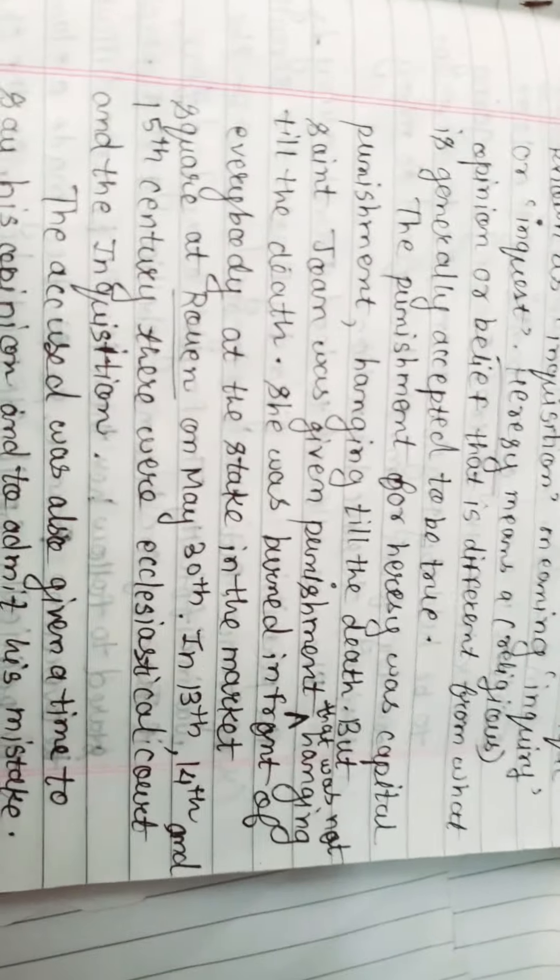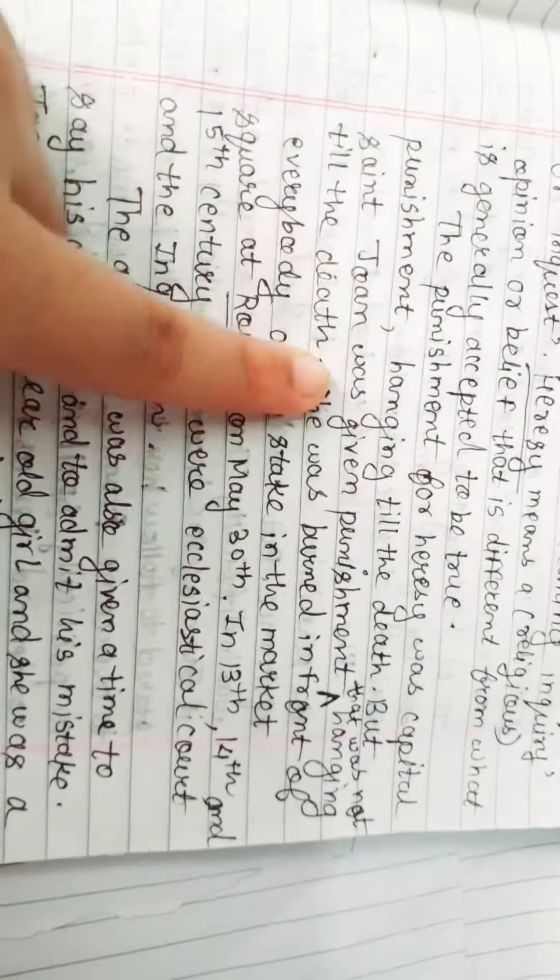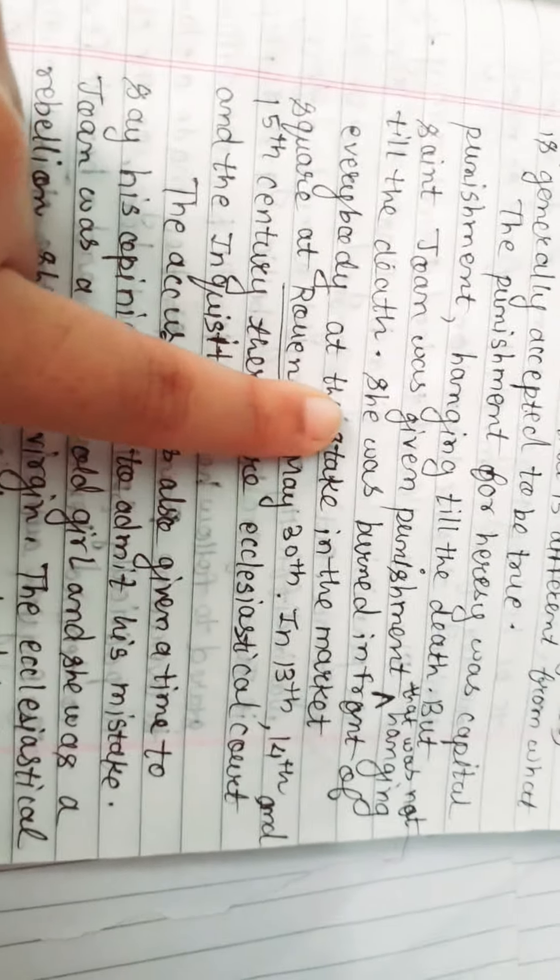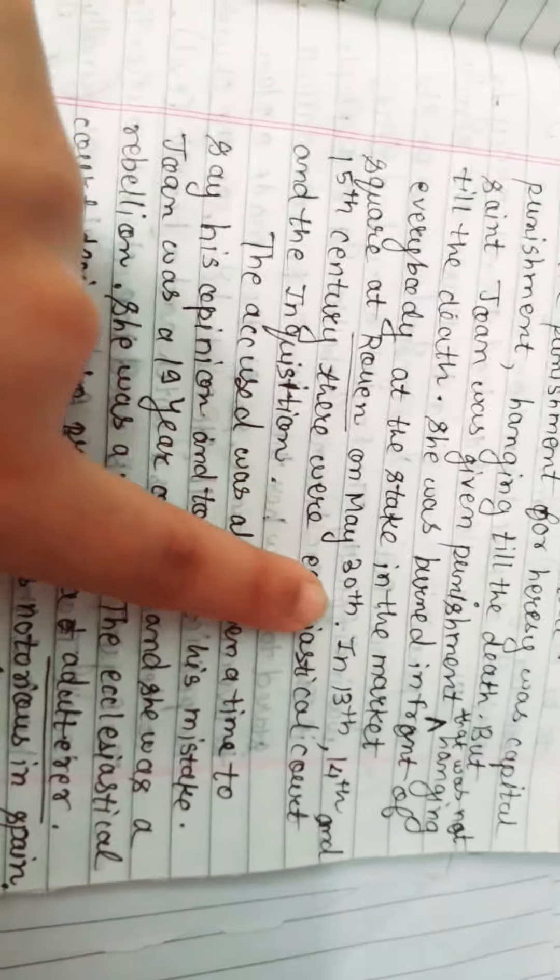The punishment for heresy was capital punishment, meaning hanging till death. But Saint John was given punishment of not hanging till death. She was burned in front of everybody at the stake in the market square at Rouen on 30th May.